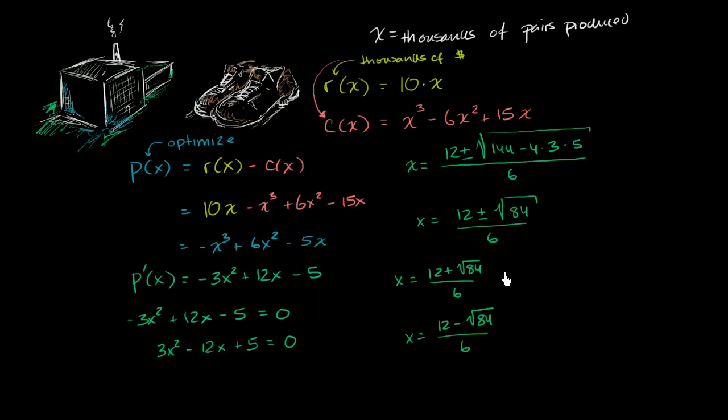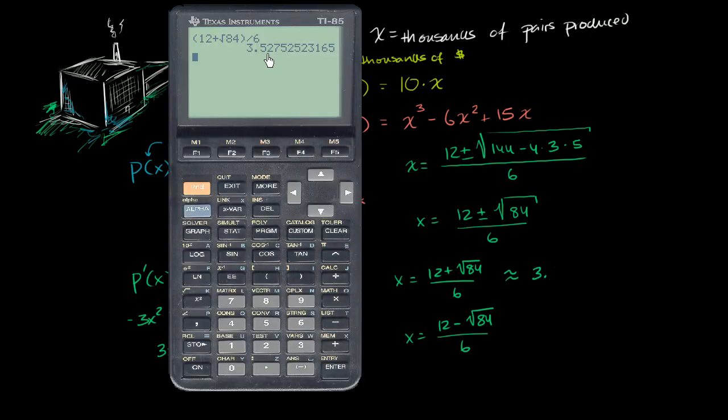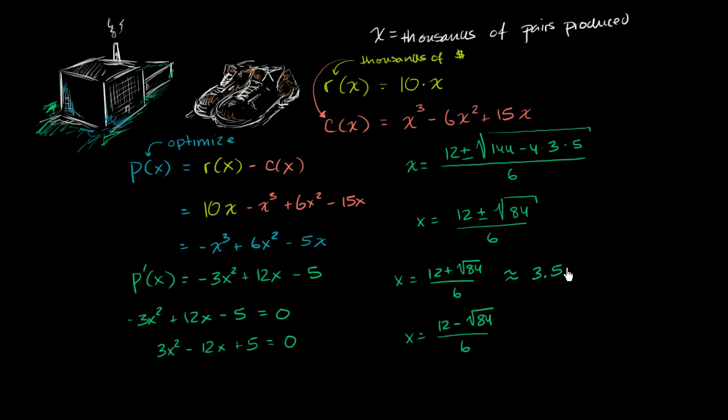So I get 12 plus the square root of 84 divided by 6 gives me 3.53. Actually, let me go one more digit because I'm talking about thousands. So 3.528, so this would literally be 3,528 shoes, because this is in thousands.